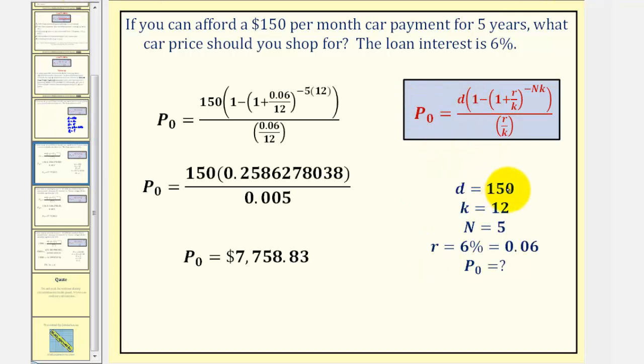D equals 150, which is here. K equals 12, which is here, here, and here. N equals five, which is here. And finally, R is equal to 0.06, which is here and here.